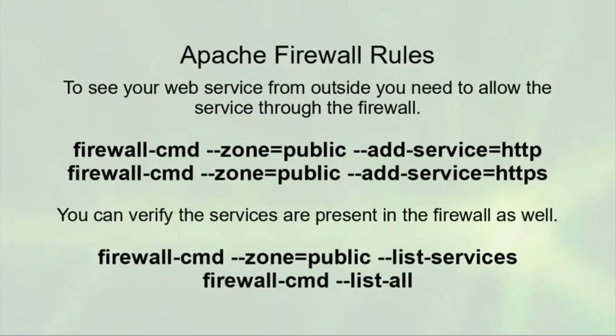Whenever you want to connect to your web server from the outside, you need to get through the firewall. The firewall is not open by default for HTTP and HTTPS services, so you need to open those up. You can do that with the firewall-cmd command, using the --add-service=http or --add-service=https options. If you want it to be permanent, you can add the --permanent option.